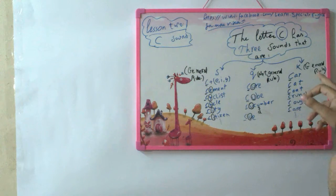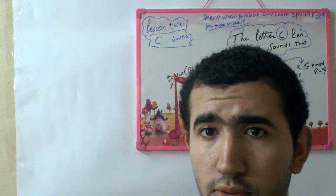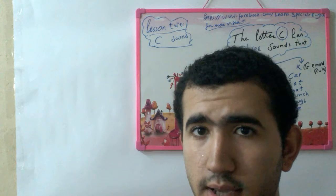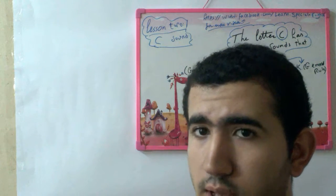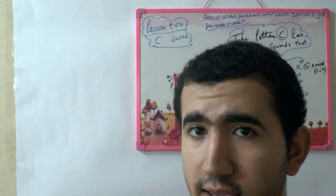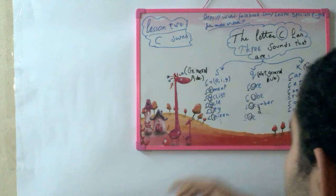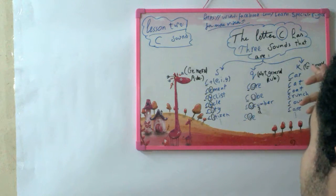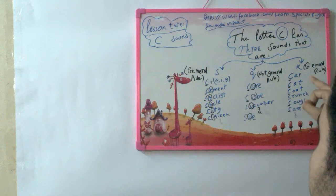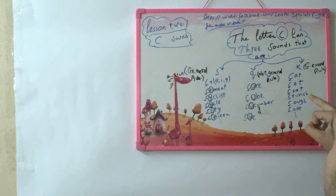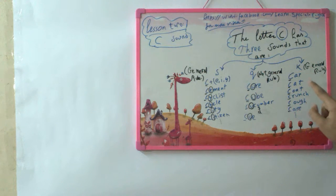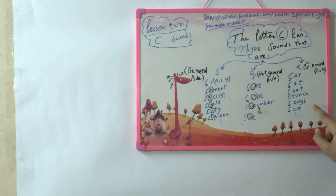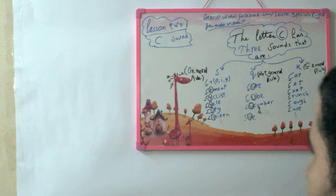The third pronunciation is K, and this is a general rule. Most words that start with the C letter are usually pronounced as K. Like car, cat, coat, crunch, cuff, and care.